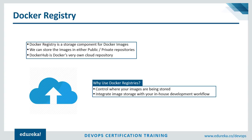Now let's look at the Docker registry. Docker has its own registry known as Docker Hub. Docker Hub is basically where you store all your Docker images. These images can be pulled from the remote server and then run locally on your system. You can also push the Docker images that you have created onto Docker Hub and share them with other users. So Docker Hub is essentially the storage house for all your Docker images.